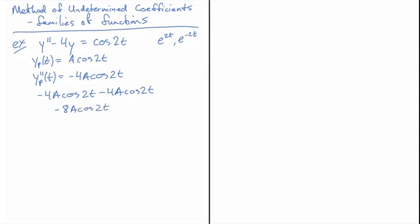So the first one comes from this expression here, and this one comes from the 4y here with a minus sign in front in the equation. So that is minus 8A cosine 2t, and I want that to equal cosine of 2t. So if I choose A to be minus 1 eighth, we should get our answer. So we have a yp of t in this case is equal to minus 1 over 8 cosine of 2t.